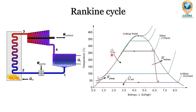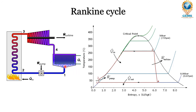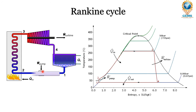Now let us see the Rankine cycle with the layout along with the temperature-entropy graph. We will look at process 1 to 2: it is from the condenser outlet to the boiler inlet — this is the pump work process. We will see the pump work process in the graph.